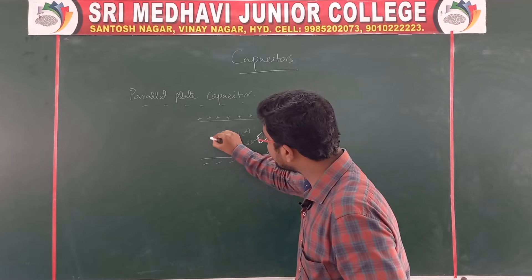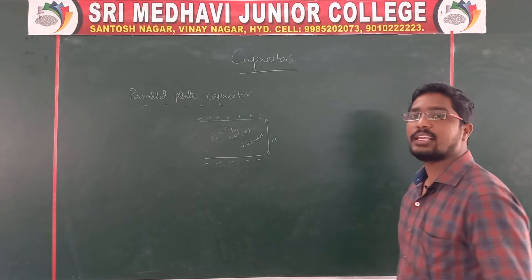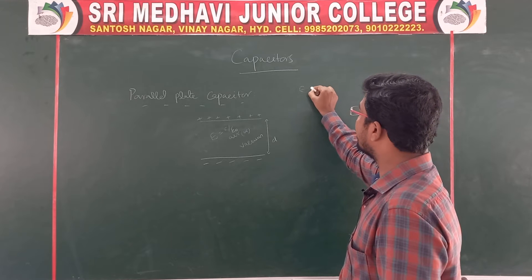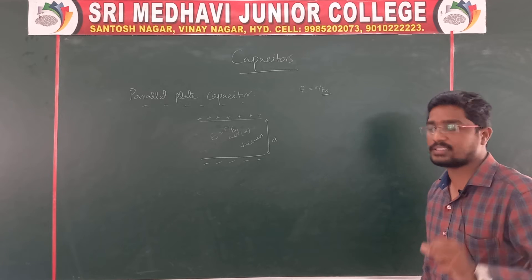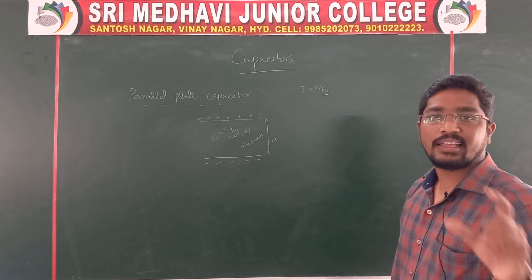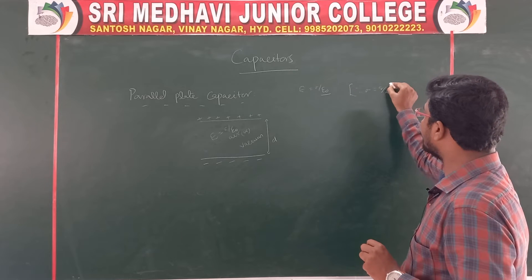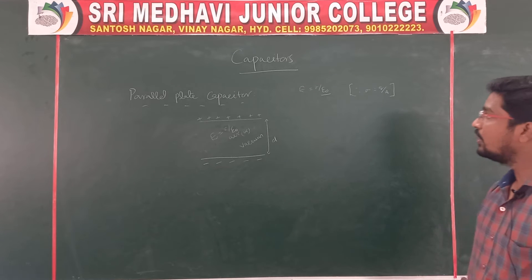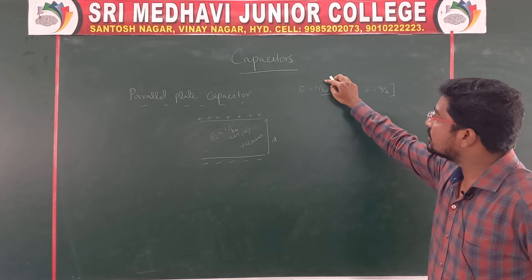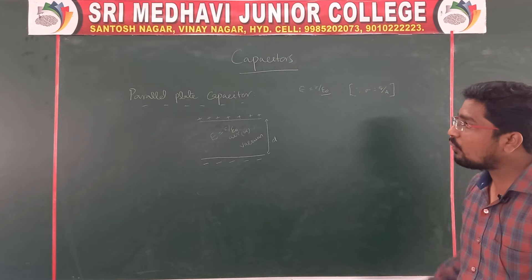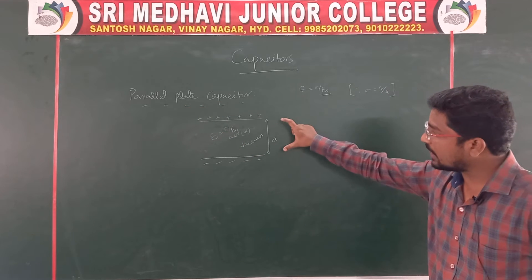The charge is stored in terms of electric field between those two parallel plates. The electric field E equals sigma by epsilon naught, where epsilon naught is the permittivity of free space and sigma is the surface charge density. The value of sigma is sigma equal to Q by A. We are going to find the capacitance of this parallel plate capacitor.